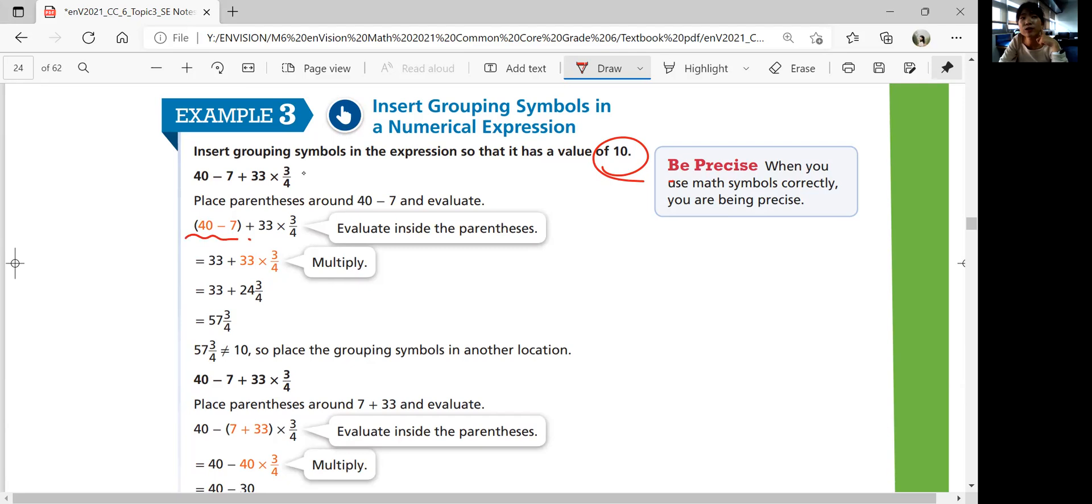Let's group 40 minus 7 first. If you group 40 minus 7, you do that first. And then you have 33 plus 33 times 3 over 4. So then you multiply that. And then you add that. You get 57 and 3 over 4. That is not 10. You will not get 10 out of this.